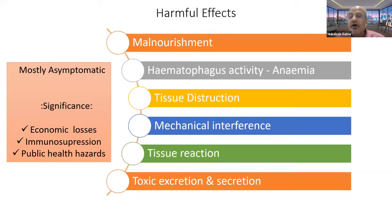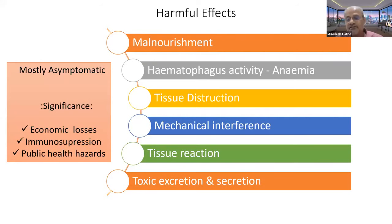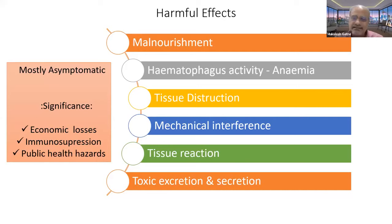Some nematodes like Haemonchus, Bunostomum, and even Fasciola are hematophagous — they suck blood. When present in large numbers they cause blood loss resulting in anemia and tissue destruction. If untreated, these worms survive in the body of infected animals for about 9 to 12 months, continuously performing their activities causing tissue destruction. Immature liver flukes migrate through the liver substance and literally cause disruption of the liver.